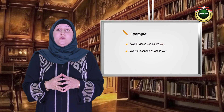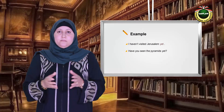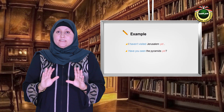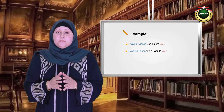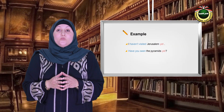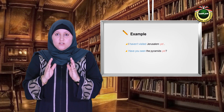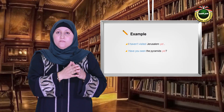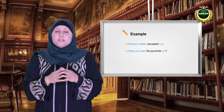One more thing before we go to the exercise. Look at these examples: I haven't visited Jerusalem yet. Have you seen the pyramids yet? If we use the word yet in a statement or sentence, we have to use the negative form of the auxiliary verbs, which are hasn't or haven't plus the past participle of the verb. However, if the word yet is used in a question, we do not use any negatives — we use have or has plus the past participle of the verb.